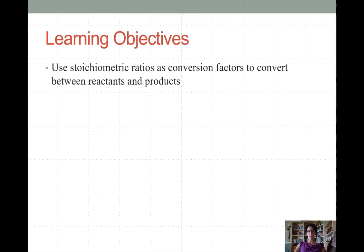For now, our learning objective is simply to use stoichiometric ratios as a conversion factor to convert between amounts of reactants and products. This is central to solving problems involving chemical quantities.